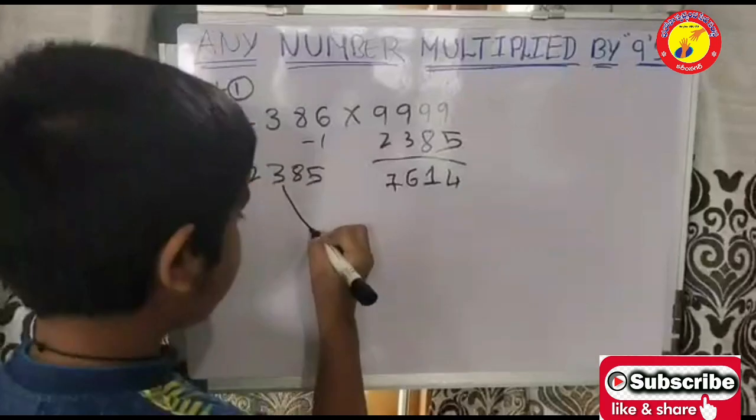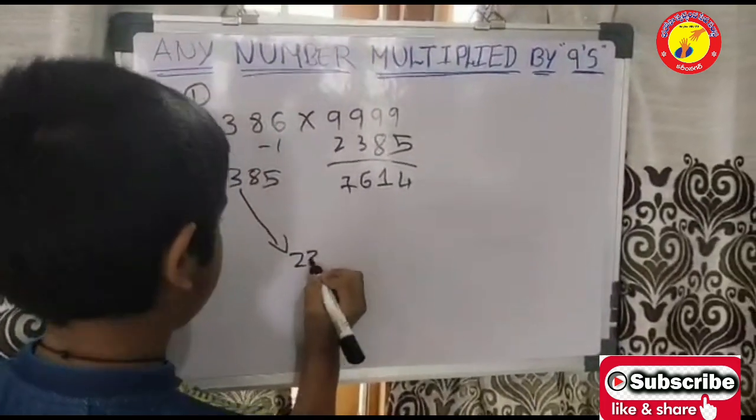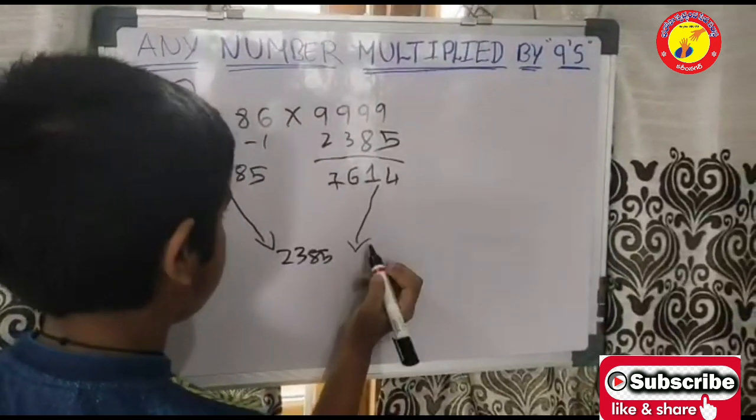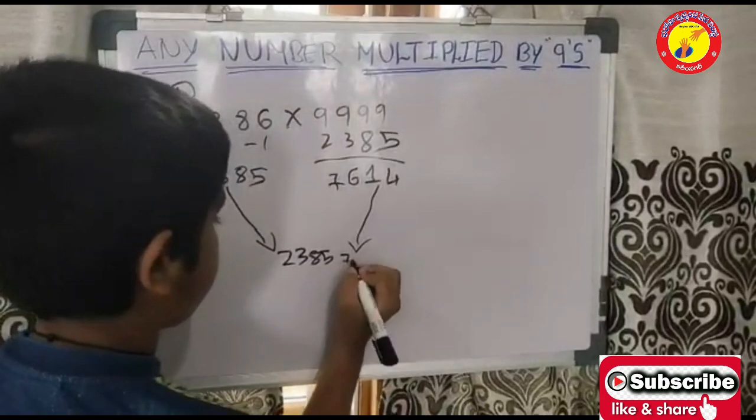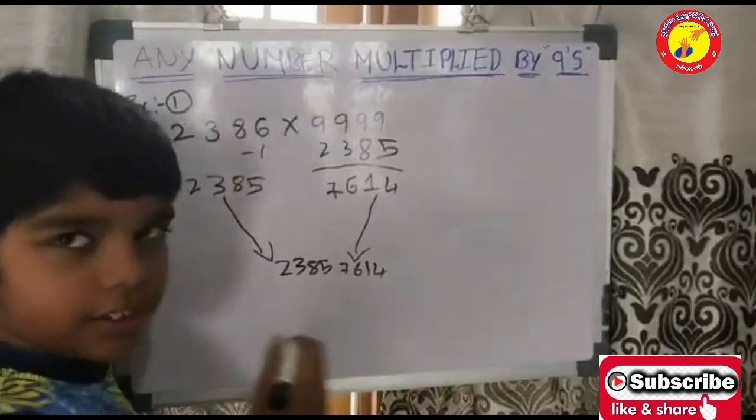Now, I am writing this number down. And this number also. This number is the answer.